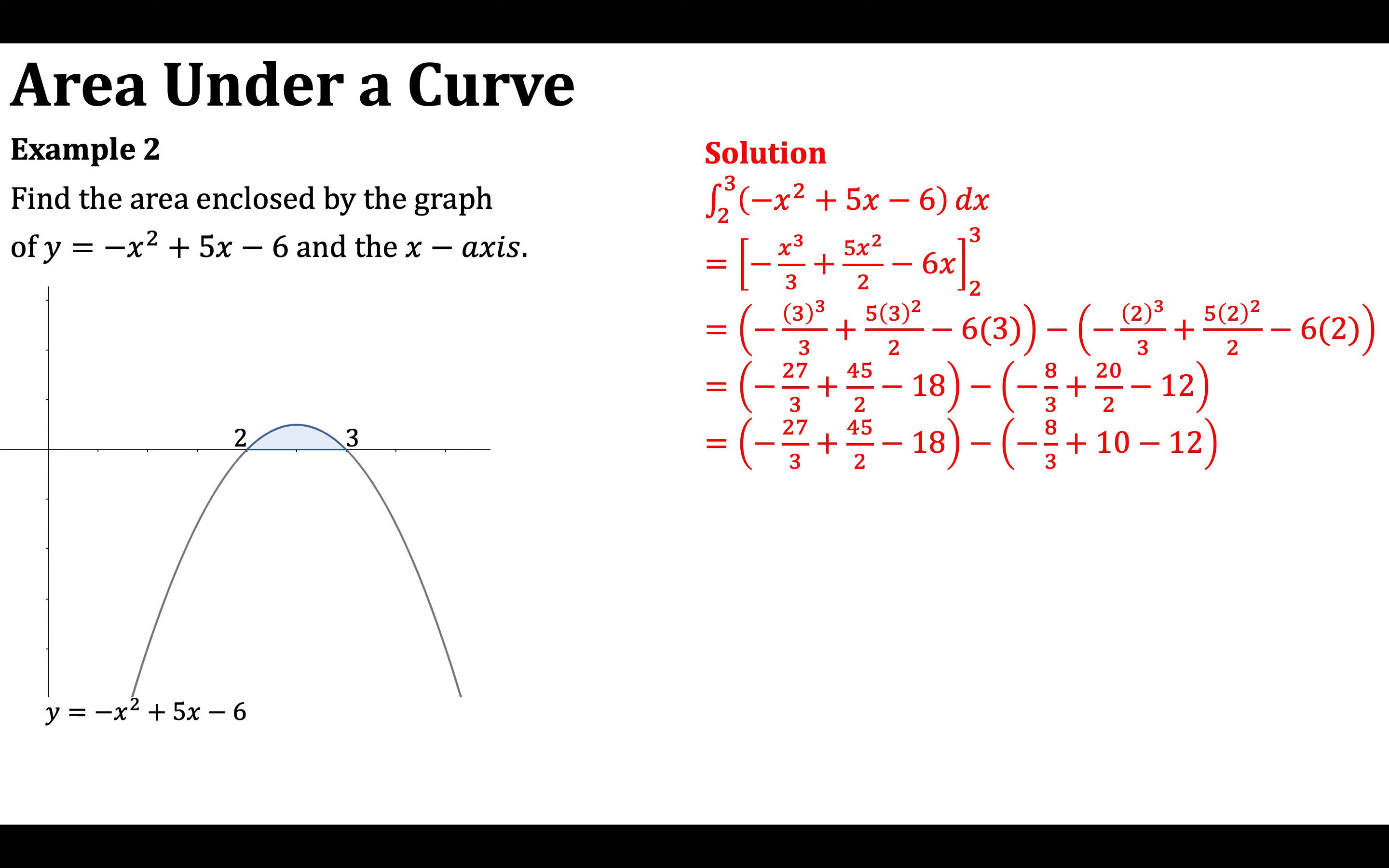Now obviously it's up to you at this stage what you do. You might notice that negative 27 thirds is negative 9, and you might decide to evaluate that at that point to have it as a whole number. Or you can deal with the thirds and then you can deal with your halves. Again, it's entirely up to you how you manipulate this numerical expression. So I know in my second bracket here, instead of 20 halves, I've got 10. And I'm then dealing with my thirds. So negative 27 thirds plus 8 thirds gives me negative 19 thirds. 45 halves. I've not got any other halves now. So I've still got my 45 halves. I've got negative 18 minus 10 plus 12. And that gives me negative 16.